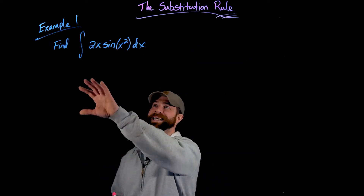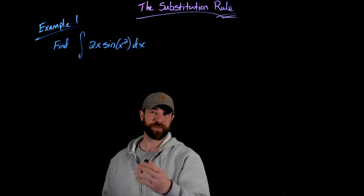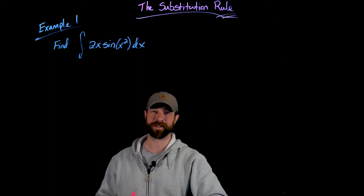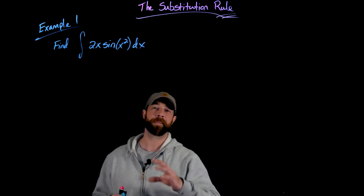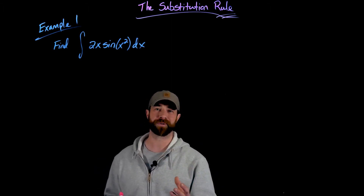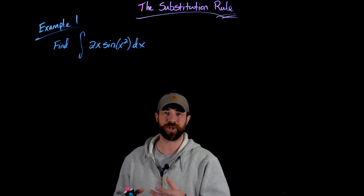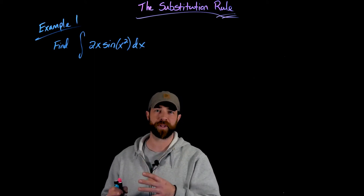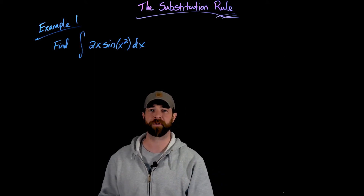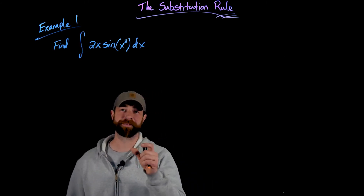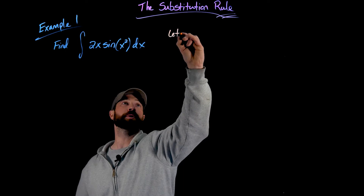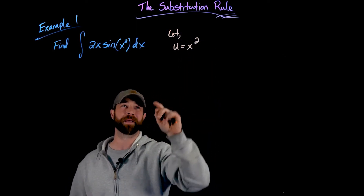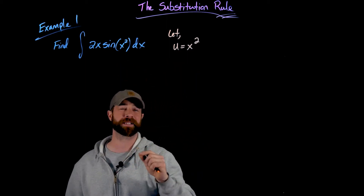In this first example, we're trying to integrate 2x times sine of x squared with respect to x. I'll show the method first — making the choice of u and the substitutions — and then we'll talk about why I made those choices. I'm going to let u equal x squared. I'm using x squared because it's the inner function here. So u equals x squared, which means du/dx equals 2x.